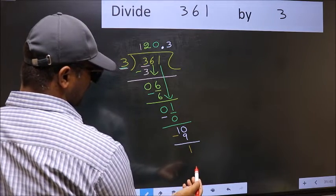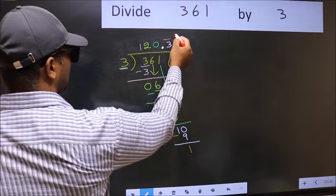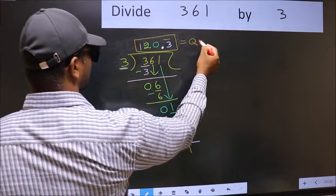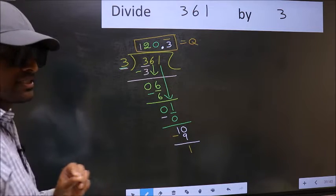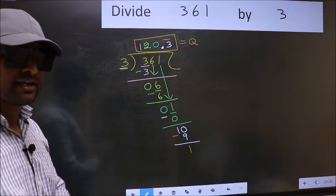We got 1 again. That means we get bar on this number. So this is our quotient. Did you understand where the mistake happens? You should not do that mistake.